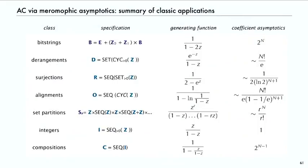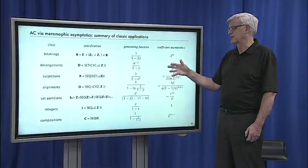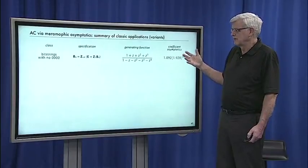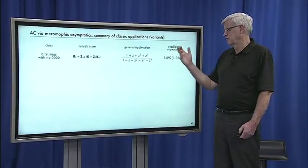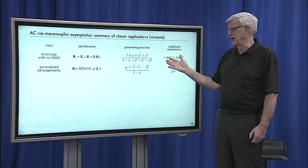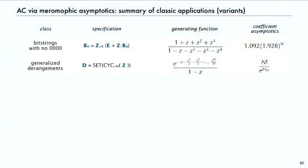Not only are we able to do these classic combinatorial classes, but also we can do variations, like restrict the bit strings to not contain particular patterns, or generalized derangements where we parameterize the number of cycles that are disallowed.